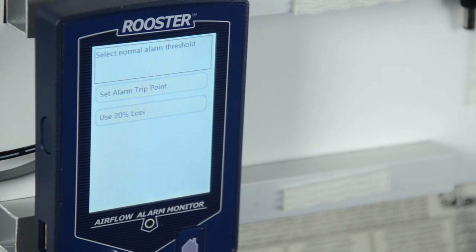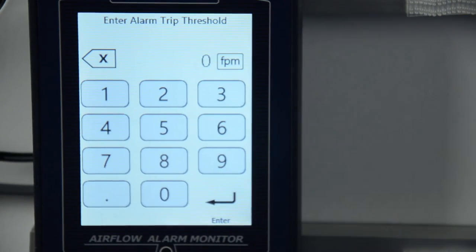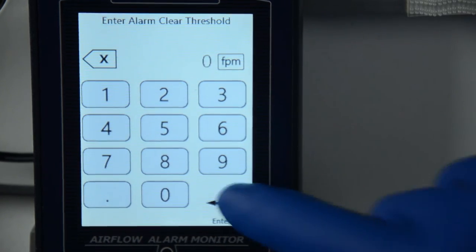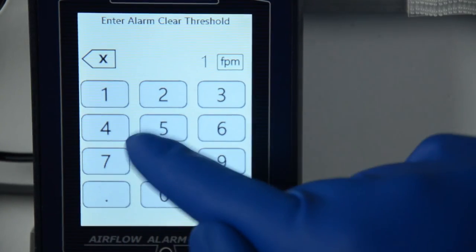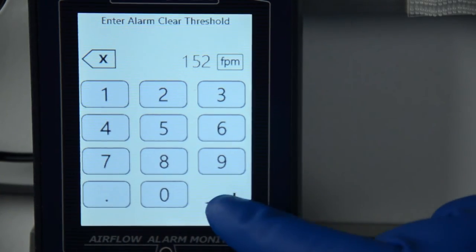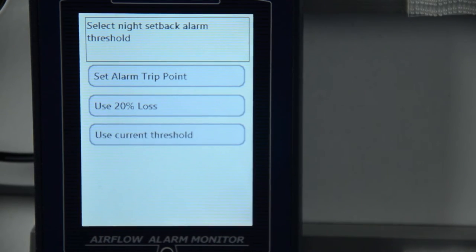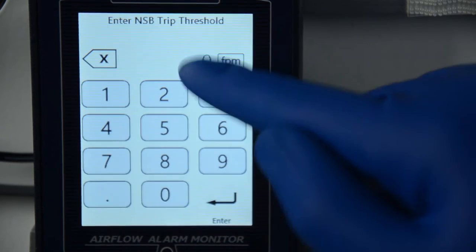The next step is to set an alarm threshold to establish the alarm trip and clear points. You may opt to manually input specific velocity values for both the alarm trip and clear points, or use a predefined value based on a 20% loss of your defined safe operating airflow. You will also be prompted to enter the values for night setback mode of operation.